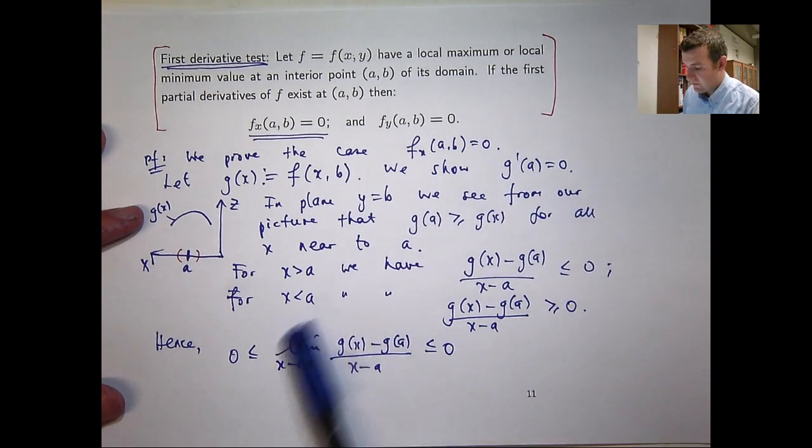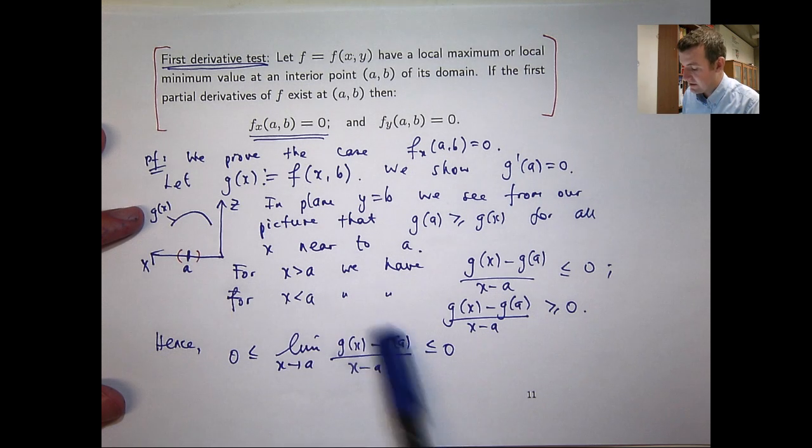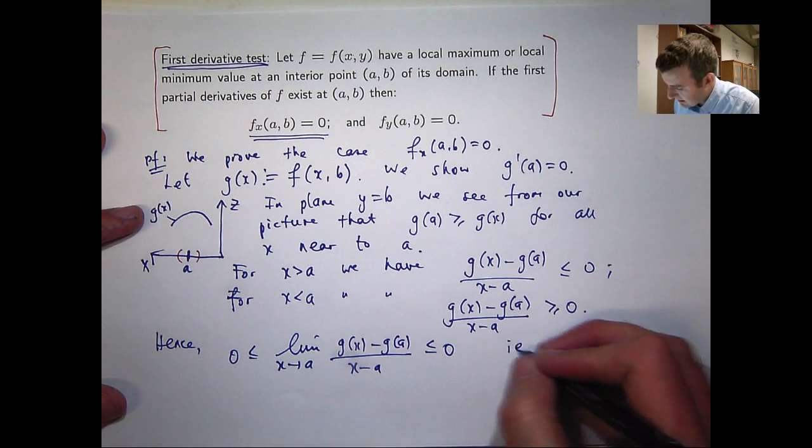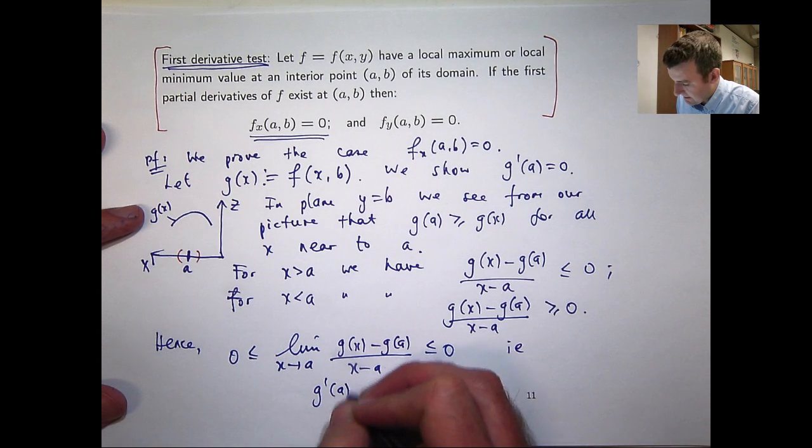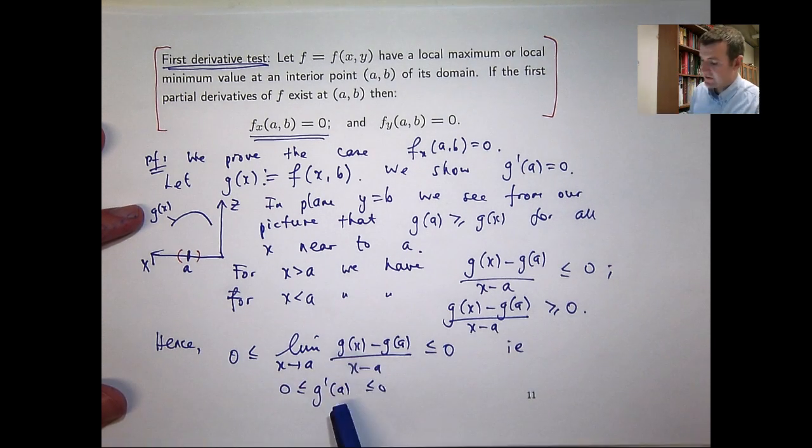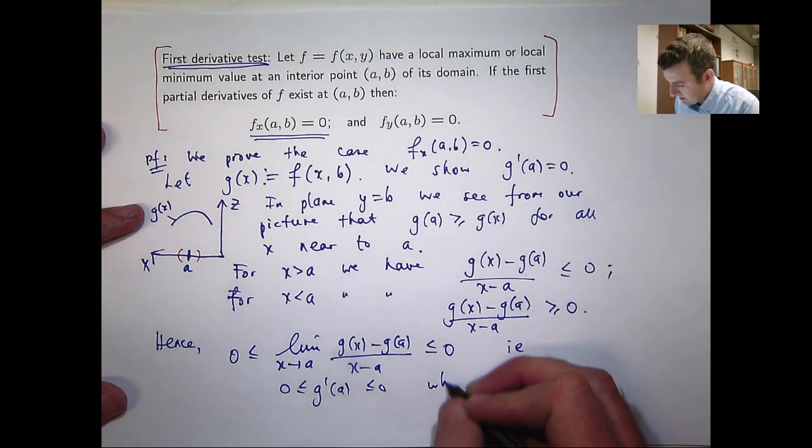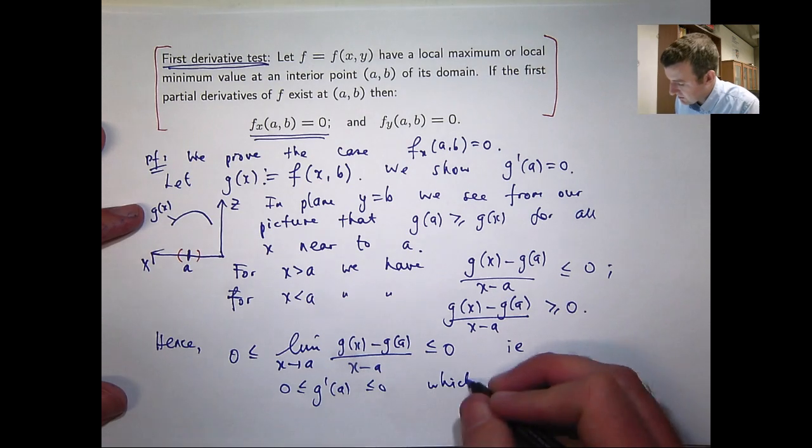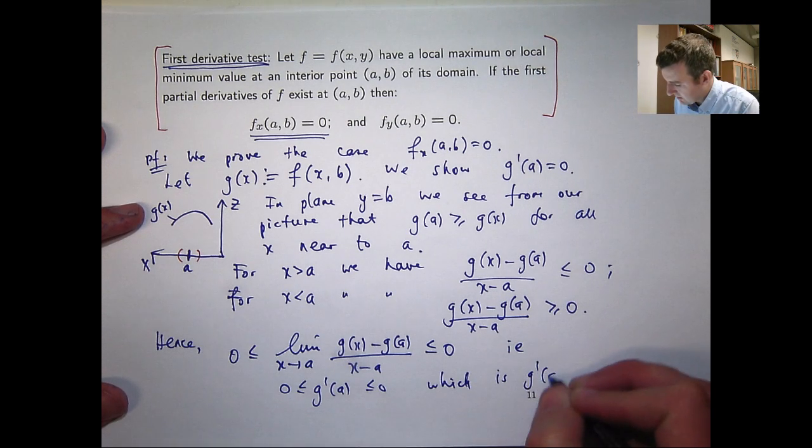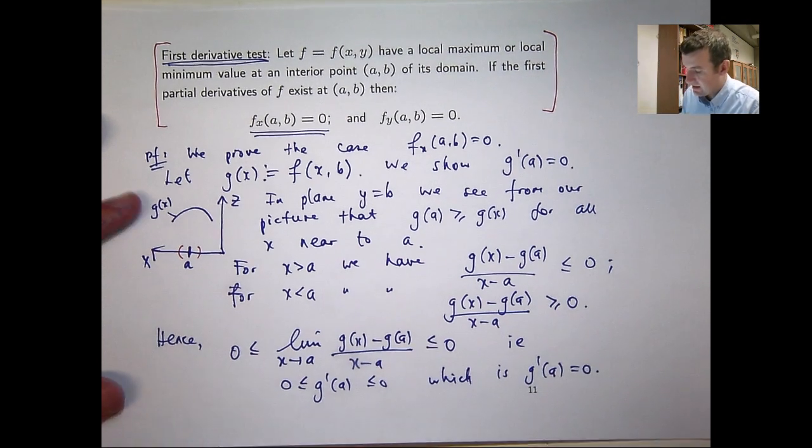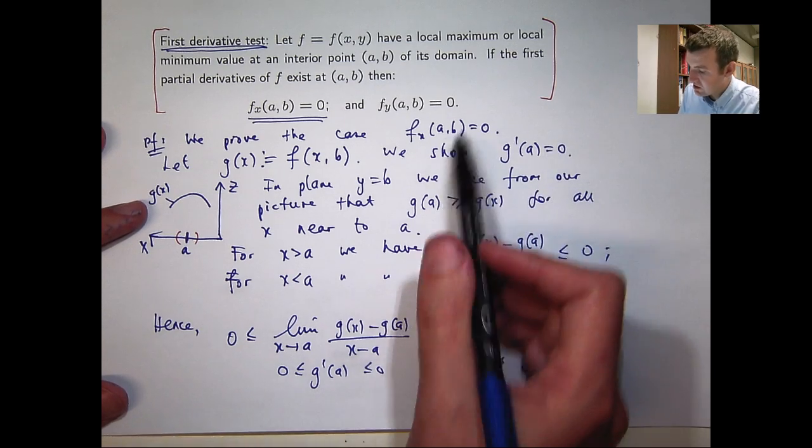So, now remember the definition of a derivative of functions of one variable. This is just g dash of a. And I know that if something is greater than or equal to zero and less than or equal to zero, the thing in the middle must be zero. So, we've shown this which is equivalent to showing this.